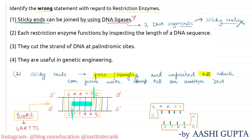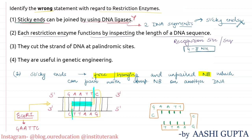So our first option is incorrect, because DNA ligase is not required when sticky ends are present. Now for option two: it says each restriction enzyme functions by inspecting the length of a DNA sequence. Every restriction enzyme has a particular recognition sequence — a recognition site of 4 to 8 nucleotides — so this statement is correct.